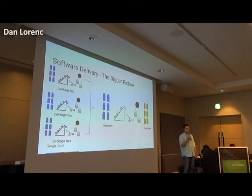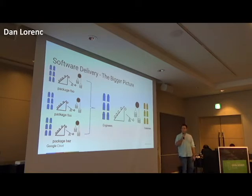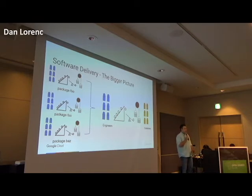These Rube Goldberg machines have all the data we need to start securing supply chains, but we can't access it because it's buried in different file formats and different specifications. These pipelines can't communicate with each other.